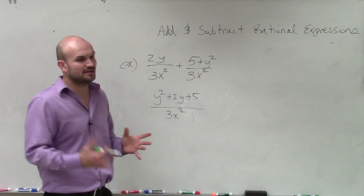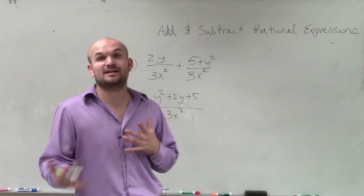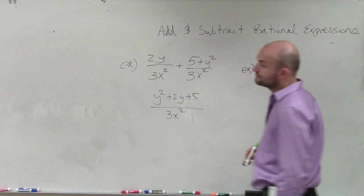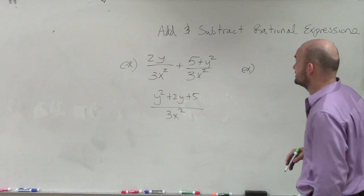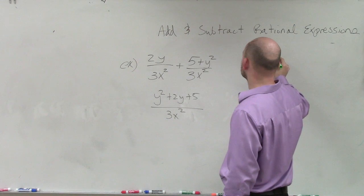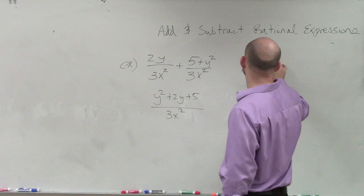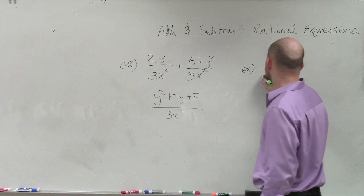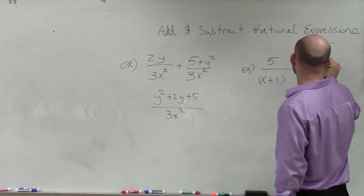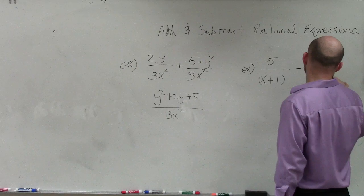So let's look at at least one more that's going to have a binomial to it, or a monomial, that you can do when we have not the same denominators. So let's look at x plus 1 minus 2 over x plus 2.